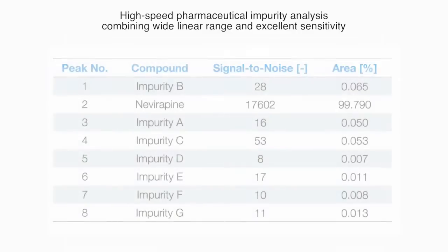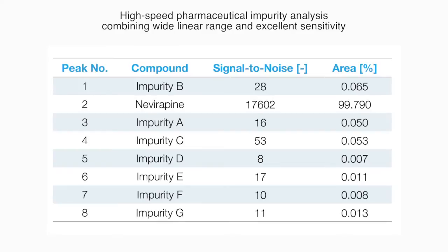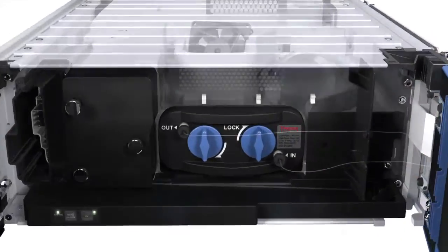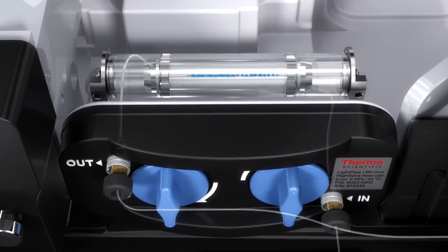And the wide linear range of up to three absorbance units will ensure that the main compounds are still detected accurately. 200Hz data collection will keep up with even the fastest UHPLC separations.